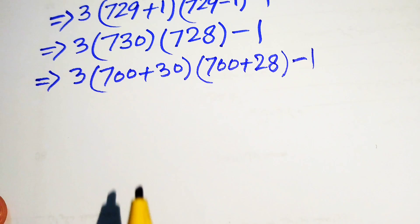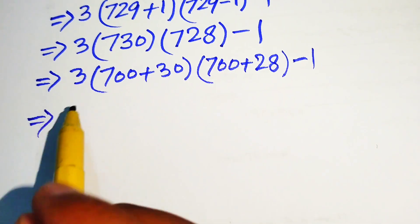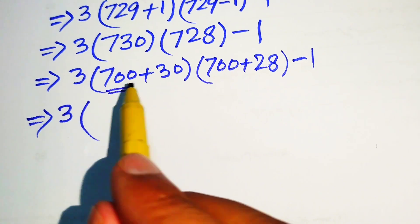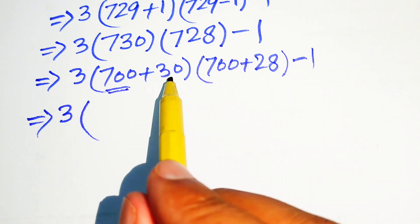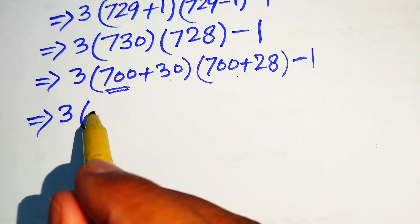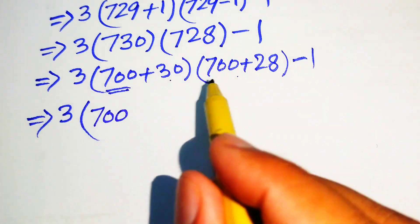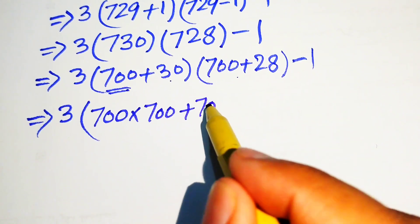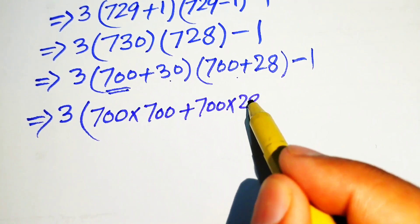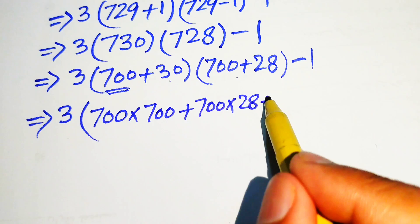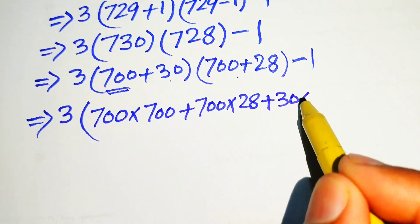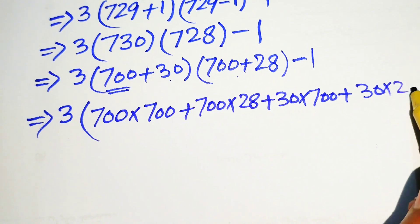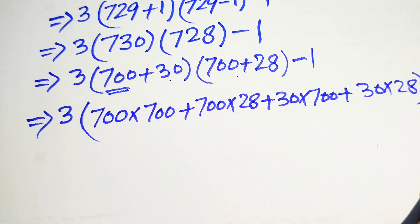Now we multiply these two factors and move towards our final answer. First we multiply 700 by both terms: 700 times 700 plus 700 times 28. Then we multiply 30 by both terms: 30 times 700 plus 30 times 28, minus 1.